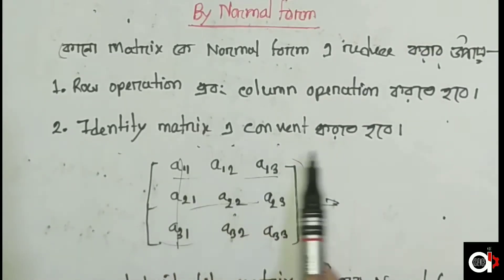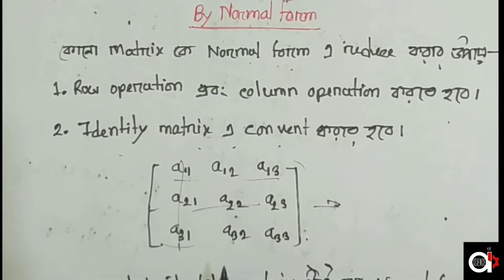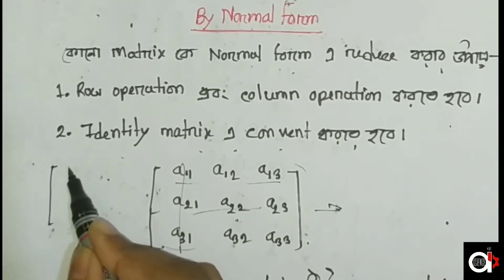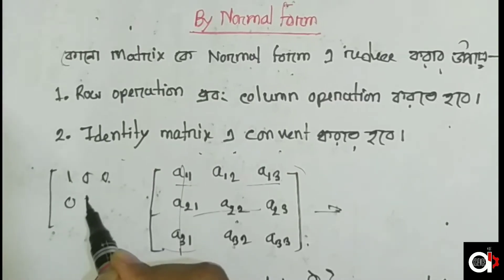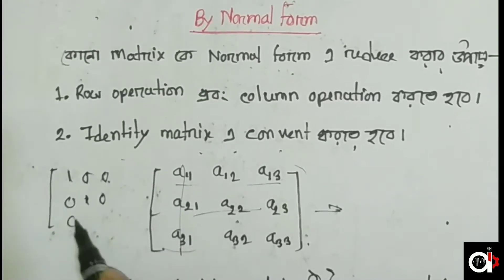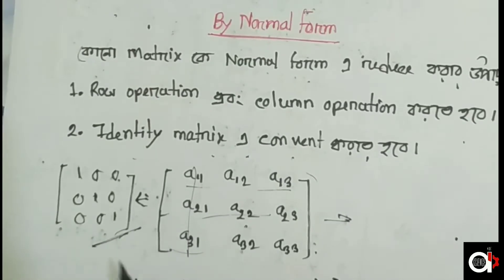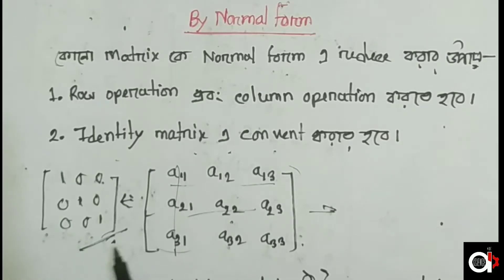The matrix will be converted to an identity matrix. The identity matrix has diagonal elements equal to 1 and all other elements equal to 0. I will convert the given matrix to this identical matrix form, which is the normal form.